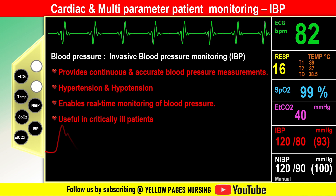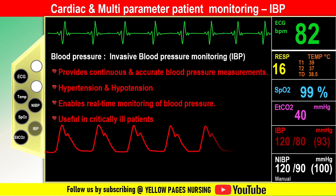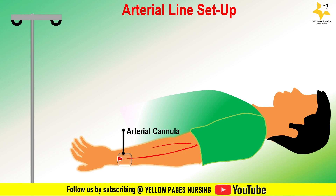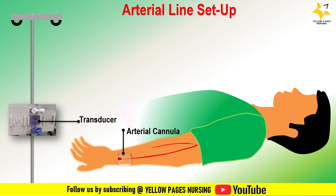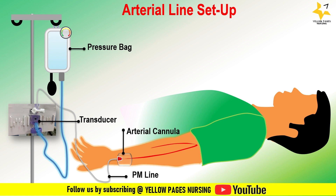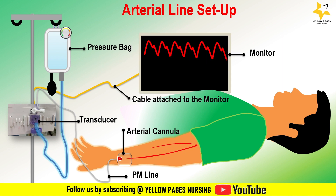Invasive blood pressure monitoring uses an arterial line setup. An arterial catheter is inserted into the radial artery. A transducer is connected on the IV stand at the level of the phlebostatic axis. A pressure monitoring line is connected to the transducer kit, a pressurized saline bag is attached to the IV pole, and IV tubing connects to the other end. A cable from the transducer is attached to the monitor for measuring real-time blood pressure. Nursing considerations: remove air and clots from the lines and check backflow of the arterial line.